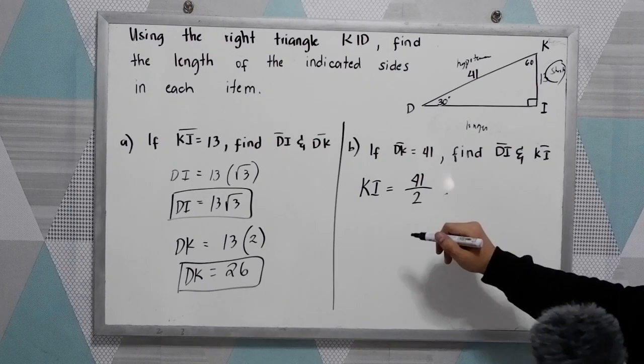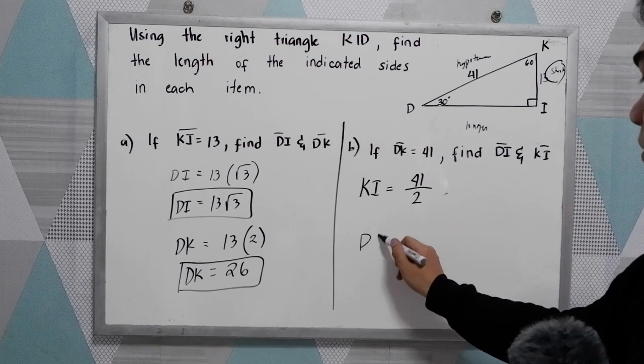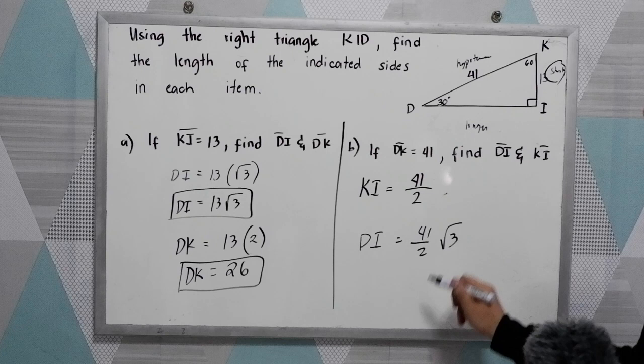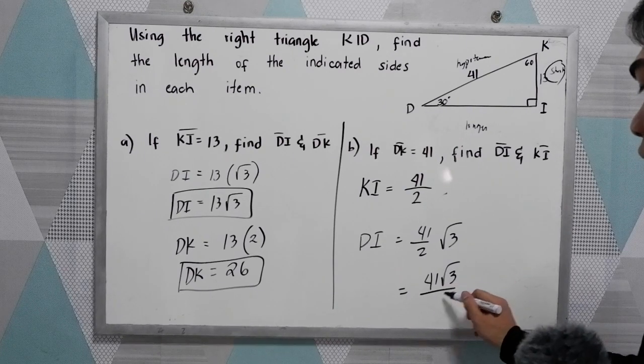Now our DI, 41 over 2, multiply it to the square root of 3. So we have 41 square root of 3 over 2. That would be our value of DI.